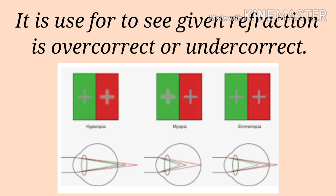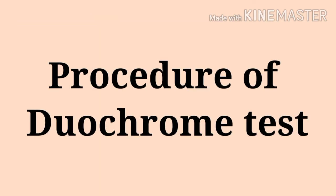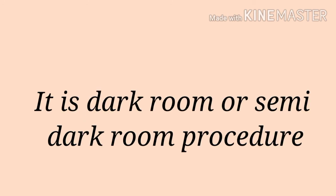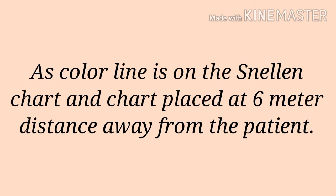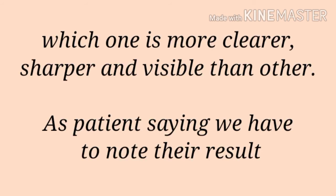How do you perform the duochrome test? As it is a subjective refraction procedure, it requires a darkroom or semi-darkroom. The procedure contains red and green colored lines on the Snellen chart, and the chart is placed at 6 meters distance from the patient. The optometrist asks the patient to read both colored lines and tell which one is more clear, sharper, and visible than the other.